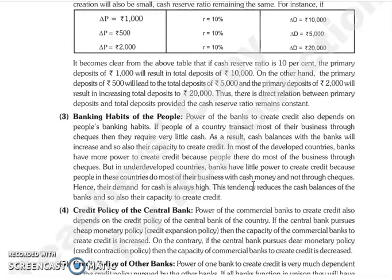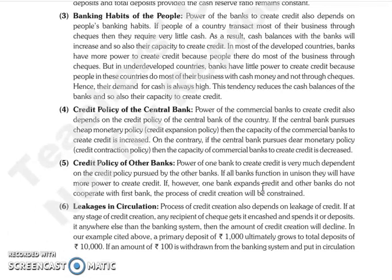Credit creation also depends on the amount of the primary deposit. If the cash reserve ratio is more, less credit will be created; if it is less, more credit will be created. The next limitation is the credit policy of the central bank. If the central bank pursues a cheap monetary policy or credit expansion policy, the capacity of commercial banks to create credit will be increased. If the central bank adopts a tight monetary policy, the capacity will be reduced.